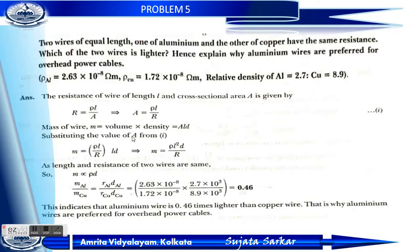Resistivity of copper rho_Cu equals 1.72 into 10 to the power minus 8 ohm meter. Relative density of aluminium equals 2.7 and that of copper equals 8.9.